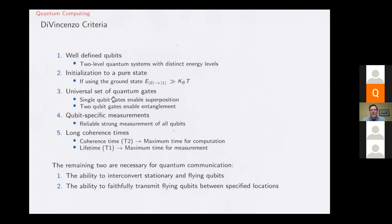We have to be able to have universal gate sets — single qubits and two-qubit gates that allow superposition and entanglement. We have to have good measurements. Measurements of quantum objects is difficult; we describe them as projection onto real states. We can make observations. And lastly, we have to have long coherence times — we have to make sure we can get really good information on these qubits.